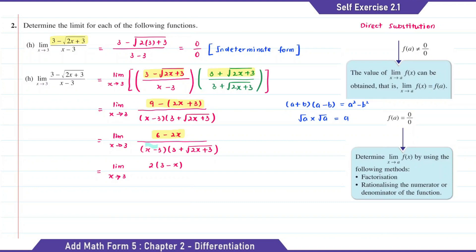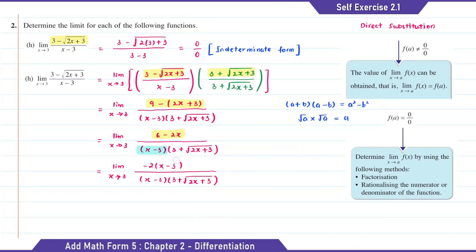But if we look at the denominator, we have x minus 3. So for the numerator part, if we can also have a bracket of x minus 3, then we can cancel this part. So here if we take negative 2 as the common factor, then we're going to get the bracket negative 3 plus x. If we arrange this, then we get x minus 3. So now we can cancel the x minus 3.